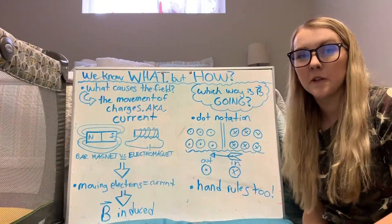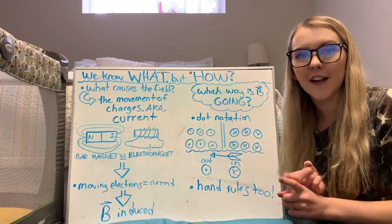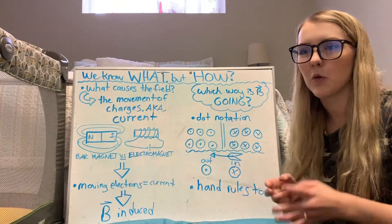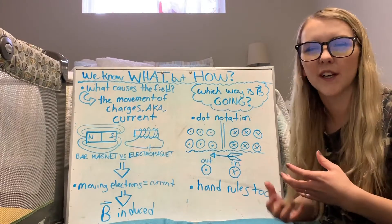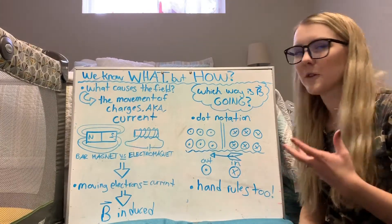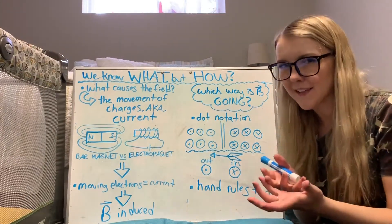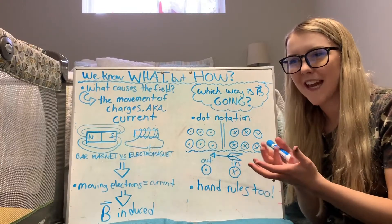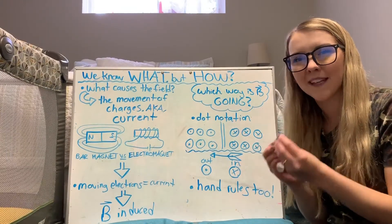All right, so now that we know what magnetic fields are and what field lines are, we're going to talk about what causes them and how they actually work. So the source of magnetic fields is a magnet, right, but in order to understand that we need to understand the source of magnets themselves.